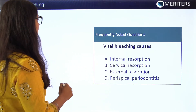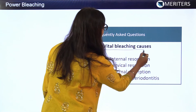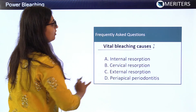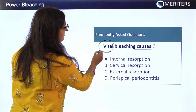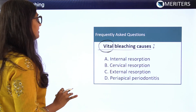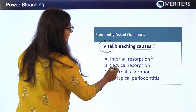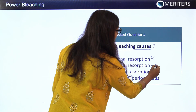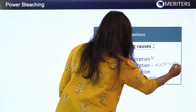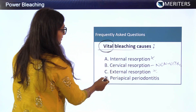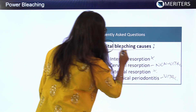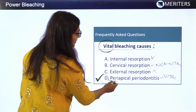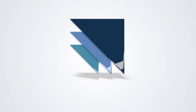A frequently asked question: vital bleaching causes what? Looking at the options, they are all side effects or consequences of the bleaching technique. Internal resorption is not a consequence here. Cervical resorption is a consequence, but it applies to the non-vital part. External resorption is not a consequence. Periapical periodontitis applies to vital teeth — so for vital bleaching, the answer is D: periapical periodontitis.